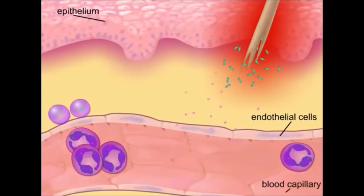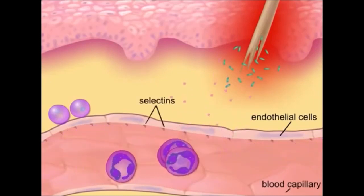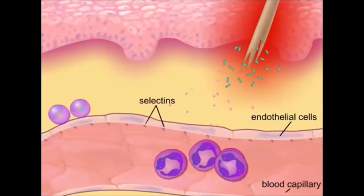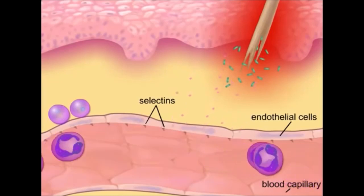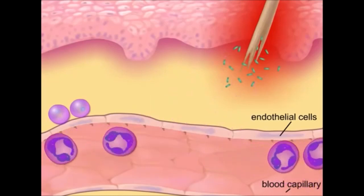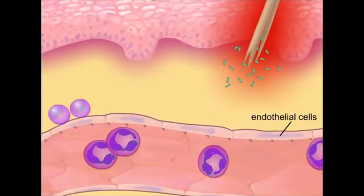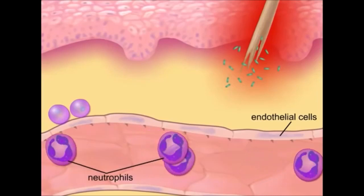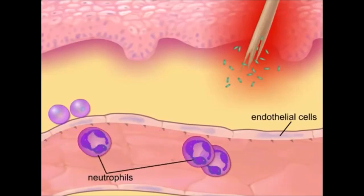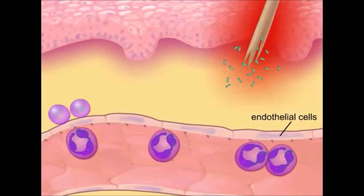Within the capillaries, adhesion molecules called selectins are displayed on the activated endothelial cells. These adhesion molecules attract neutrophils, slow them down, and cause the neutrophils to roll along the endothelium.